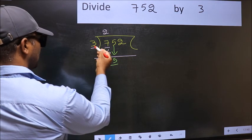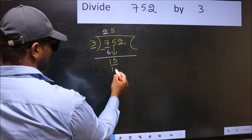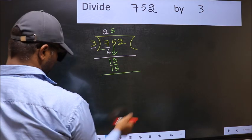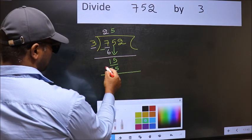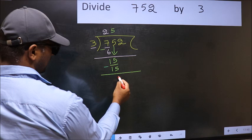When do we get 15 in 3 table? 3 times 5, 15. Now, you should subtract 15 minus 15, 0.